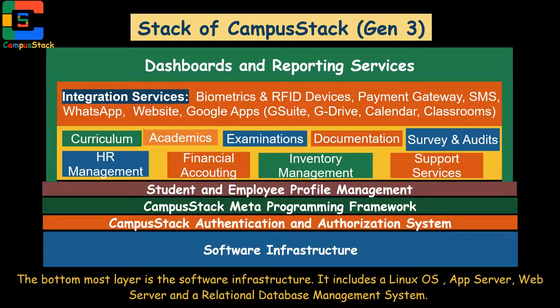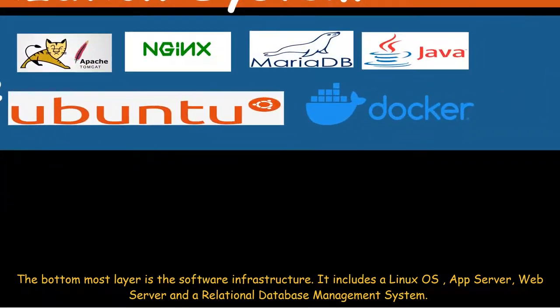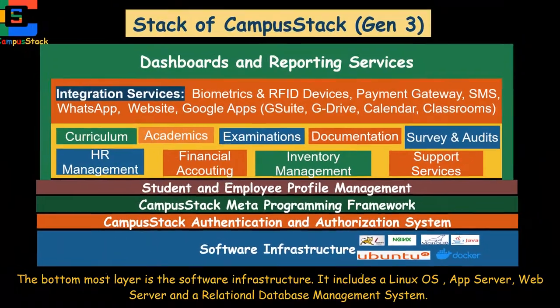The bottom most layer is the software infrastructure. It includes a Linux OS, application server, web server, and a relational database management system.